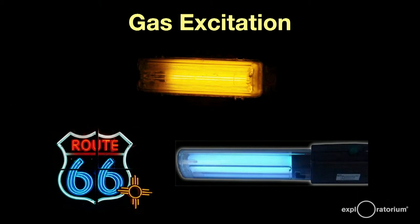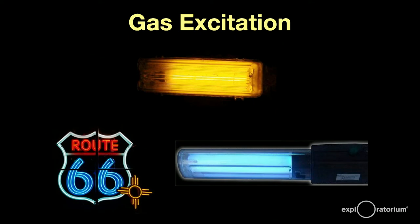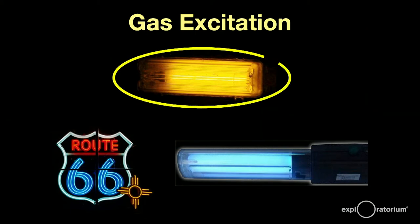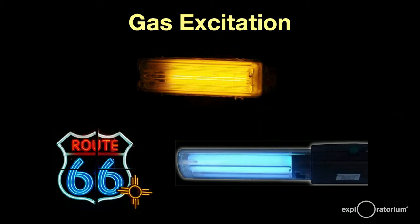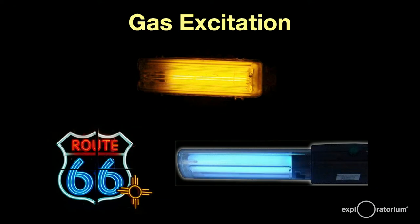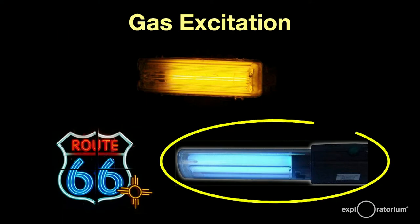The first way is to excite atoms of a gas. When the atoms de-excite, they give off light. Here, you see three examples. A low-pressure sodium lamp, which gives off a very pure yellow light. A neon sign, which, by the way, only the red is actually neon. The rest of the colors are made with mercury. And finally, a mercury germicidal lamp, with its beautiful baby blue color.